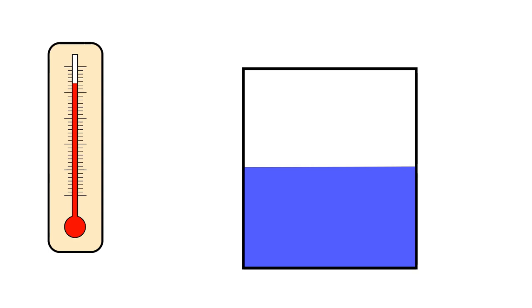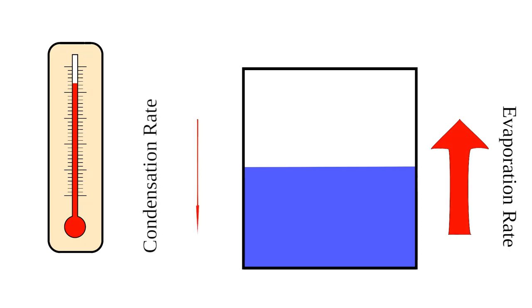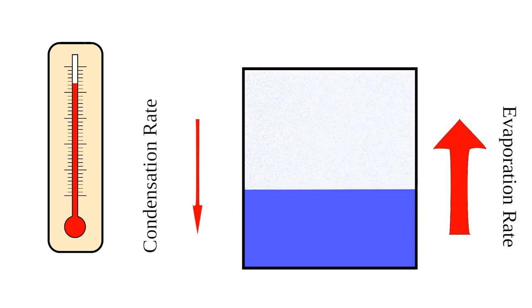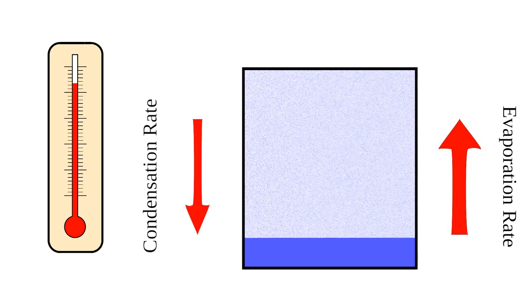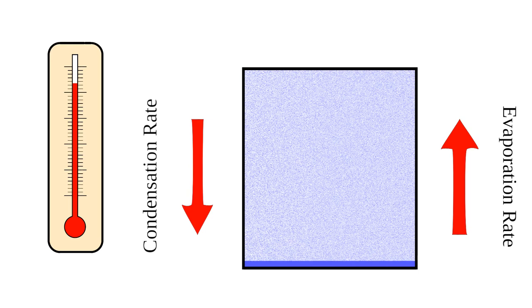On the left you can see a thermometer. The temperature is high. The box on the right represents one cubic meter of air. Let's suppose there is a certain amount of liquid water in the air to start with. Because there is so much liquid water and such a high temperature, the evaporation rate will be high. There is no water vapor present right now, so the condensation rate is almost zero. Now more and more water will evaporate until the evaporation rate equals the condensation rate. If there was not too much water present to start with, then there will not be any liquid water left.